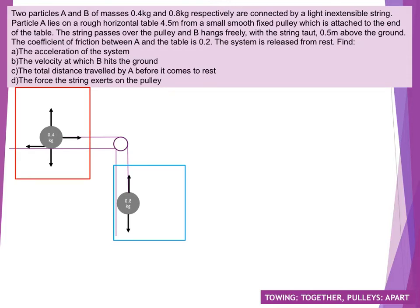So we can start off by giving a little bit more information about each of the two diagrams. On particle A, which is 0.4 kilograms, we're going to have 0.4g as the weight going downwards. We're going to have the normal going up. We've got tension in the string and we've also got friction. So we can look at the coefficient of friction, which is given in the question: mu equals 0.2. Therefore our frictional force going backwards is going to be mu N.